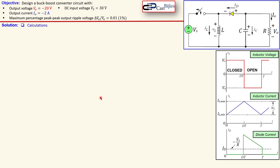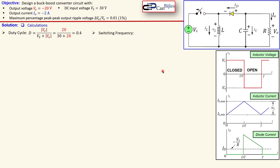Now let's look at the calculations. First we determine the duty cycle required for our design. The formula for the duty cycle for the buck-boost converter uses the absolute value of VO and VS, the input DC voltage. Substituting our values we get 0.4, or 40 percent duty cycle. We also select a switching frequency — in this case 100 kilohertz. This is an arbitrary value; 200 kilohertz or 50 kilohertz are also possible depending on your components.